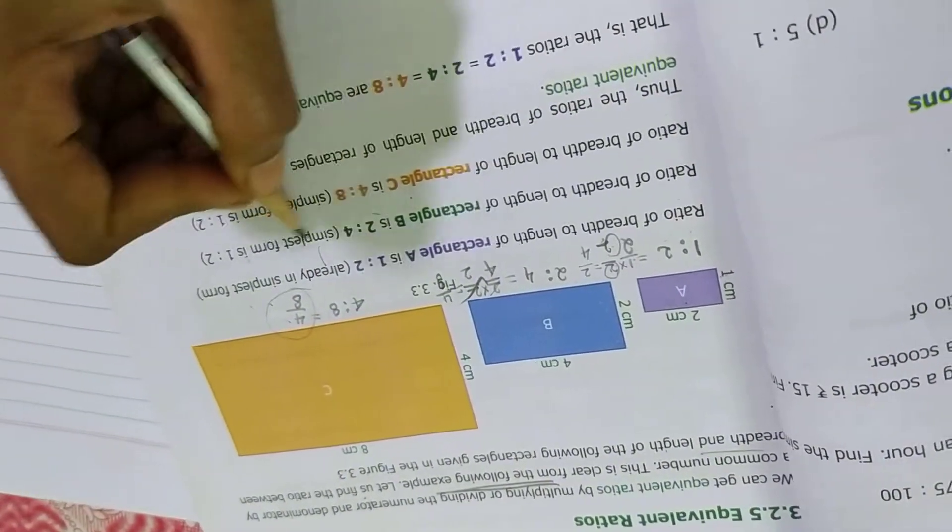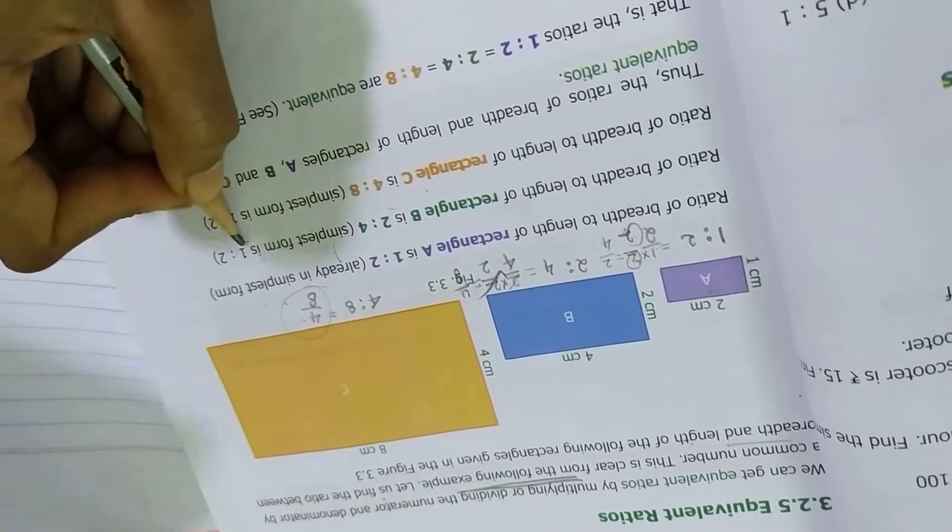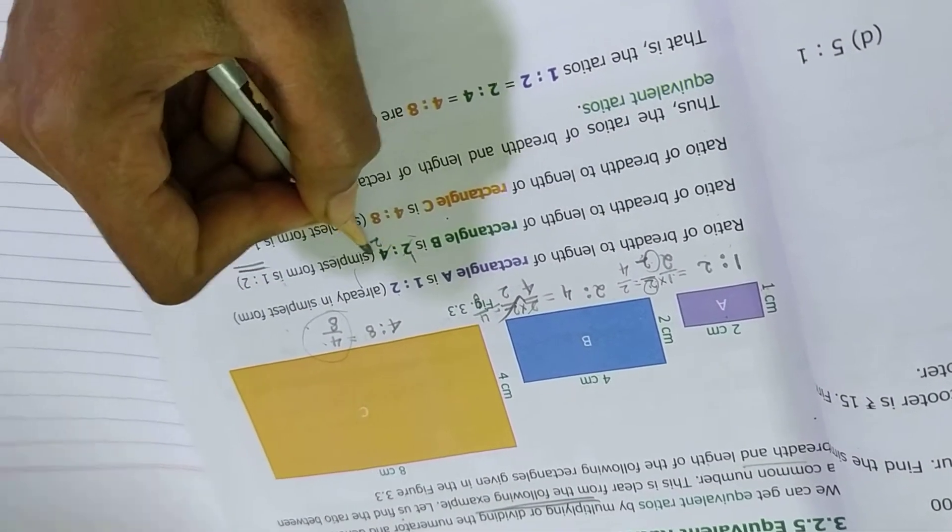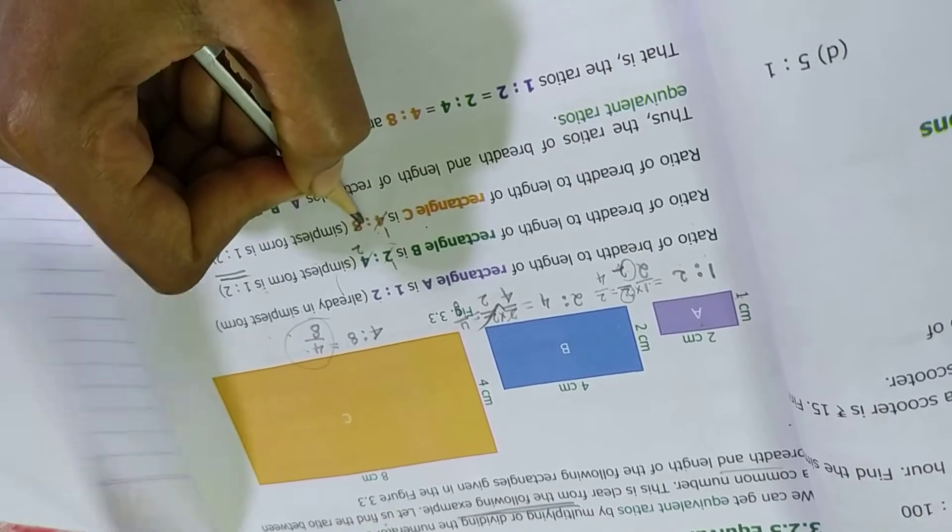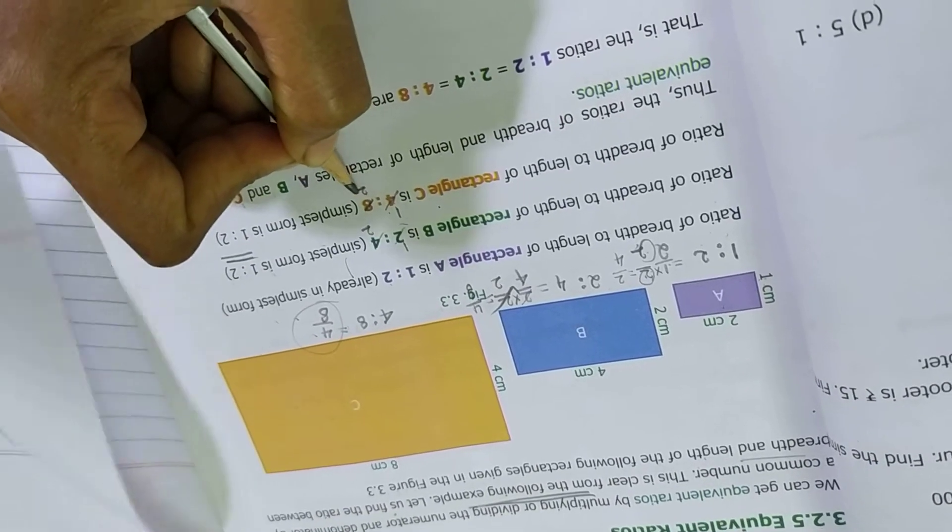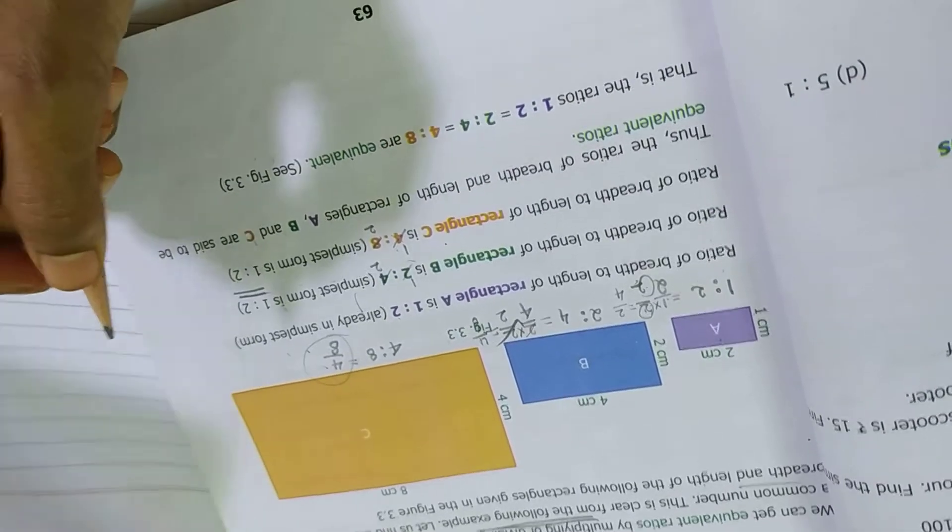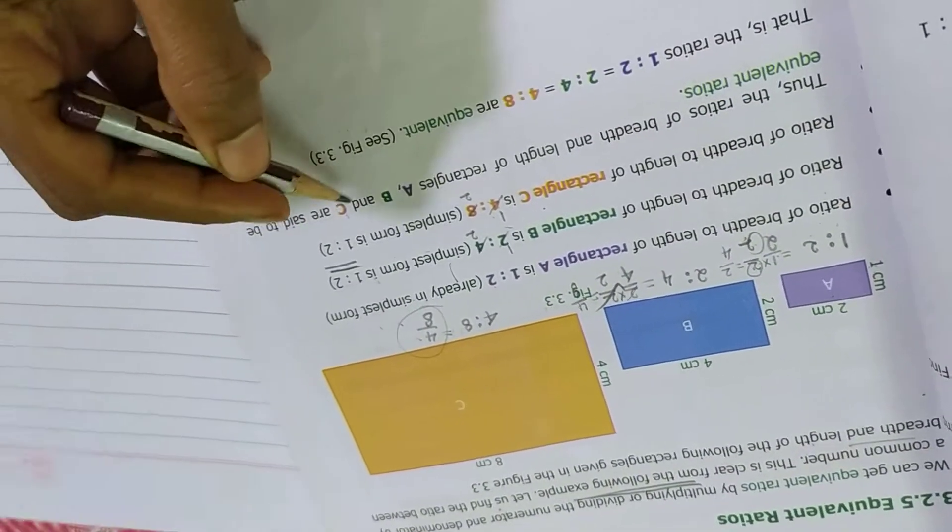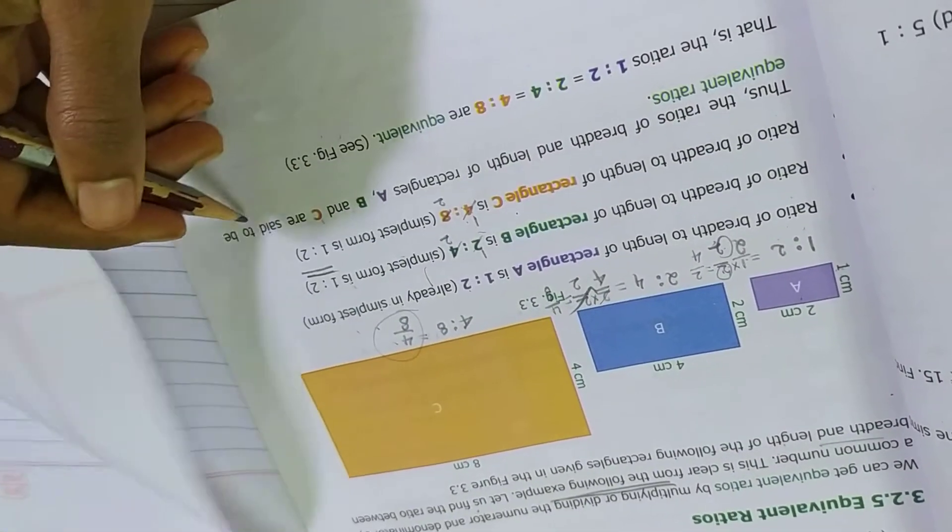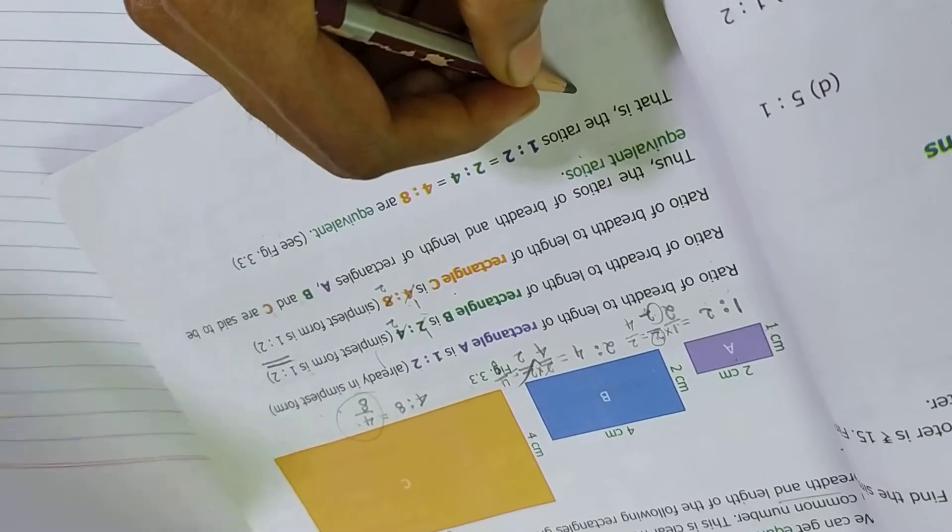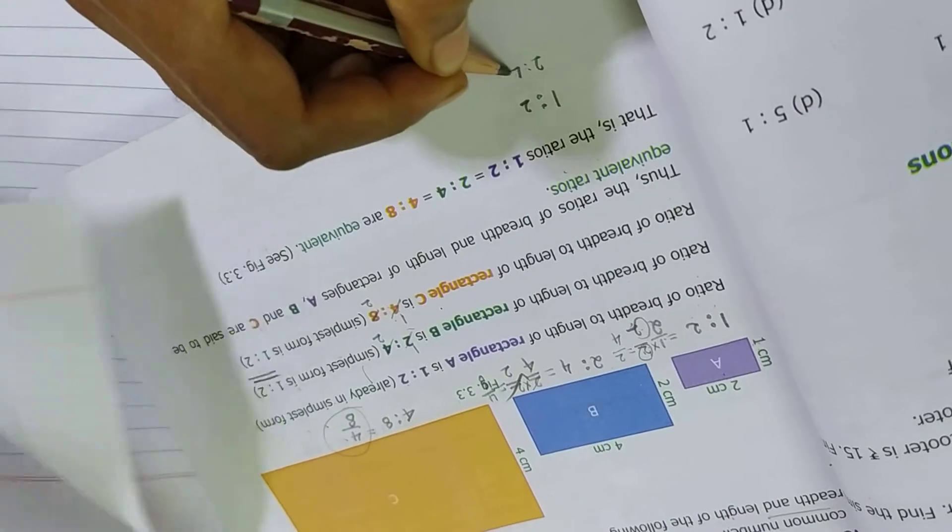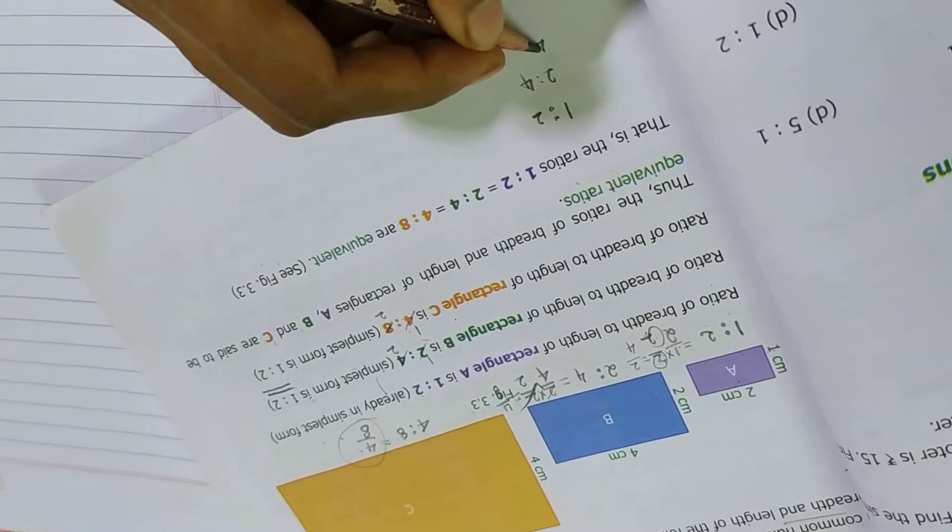So in this place the simple form of this is 1 is to 2. If you are cancelling, 1 time this is 2 times. If cancelling this, 4 table is 1 time, 4 table 8 is 2 times. So 1 is to 2. So ratio of the breadth and length of a rectangle. These 3 are equivalent ratios. So by example, 1 is to 2, 2 is to 4, 4 is to 8.